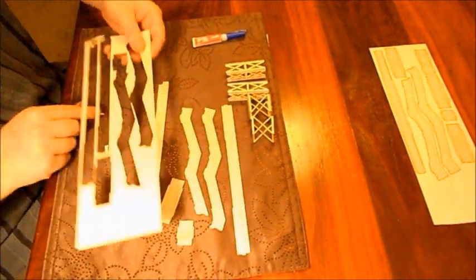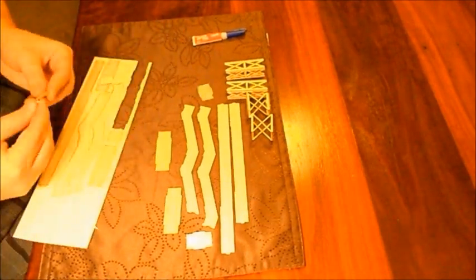Once you've assembled all the support structures, you can then start removing the other pieces from the pre-cut sheets.